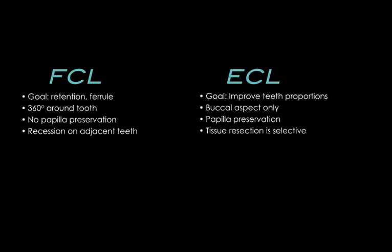Another consideration is recession on adjacent teeth. Unfortunately, that's a side effect of functional crown lengthening. If you do this properly, you will notice that the adjacent teeth — one on each side — will develop some minimal recession. That is not a positive thing and patients may get upset, so we need to discuss this with patients. With aesthetic crown lengthening, the tissue resection is selective — we are aiming for an exact gingival margin on particular teeth in specific locations and we're not expecting recession on other areas.